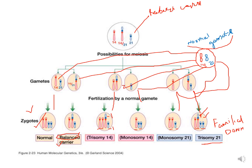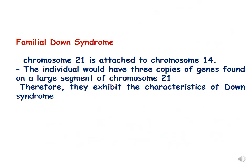This is how familial Down syndrome results from translocation — when chromosome 21 gets attached to chromosome 14, the individual has three copies of genes found on a large segment of chromosome 21, and therefore exhibits the characteristics of Down syndrome. This is different from primary Down syndrome. Thank you students — we will discuss some more topics of translocation, like position effect and cancer associated with translocation, in the last part of this lecture 4.